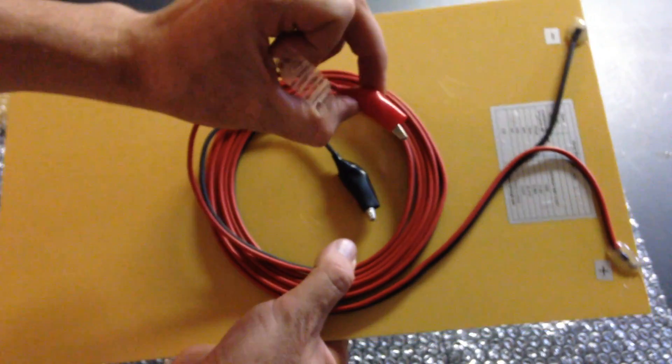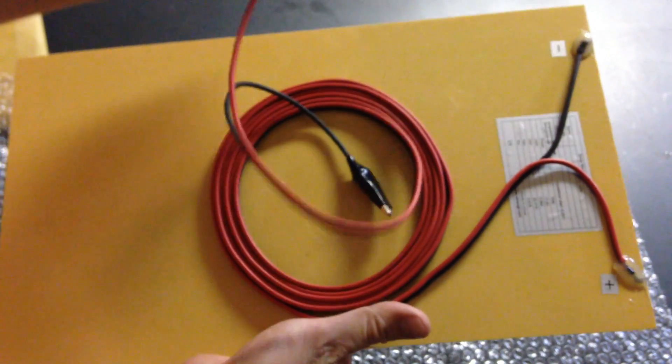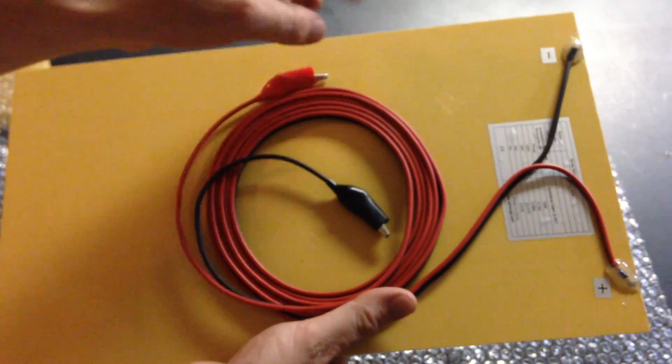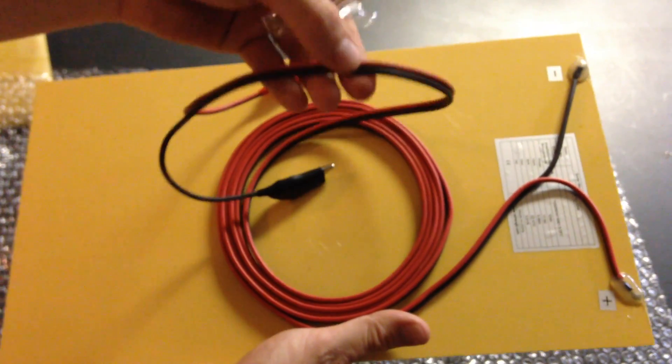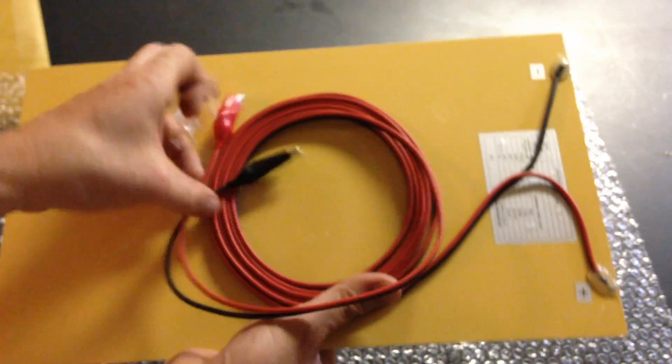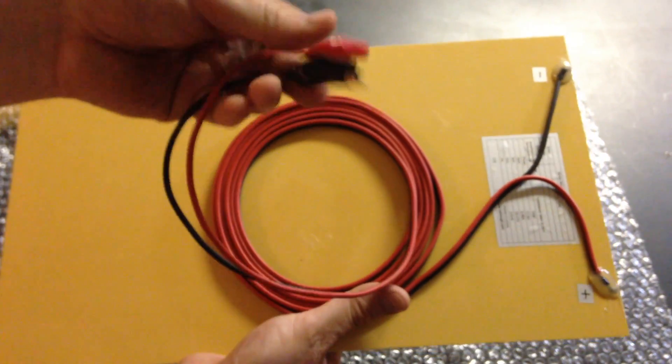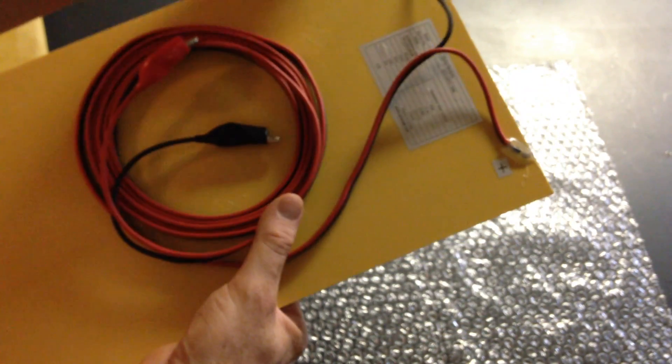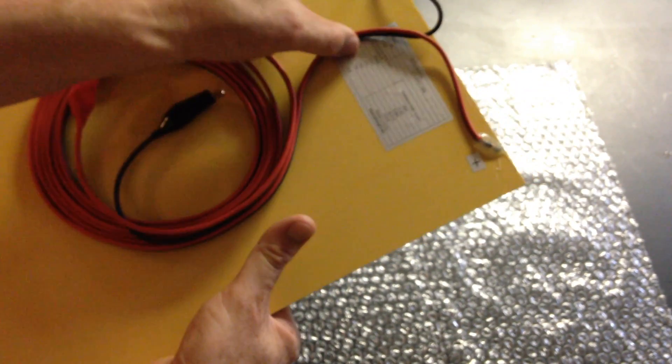These open up. Now if your solar panel doesn't come with these, don't worry about it—you can always attach them. Some solar panels just come with the cable itself, so you would just attach these on the solar cable. It's not hard, just something extra you would have to do if you didn't buy a solar panel like this.